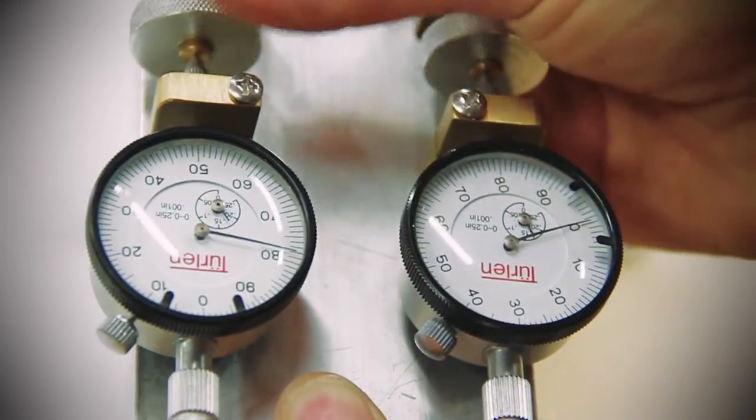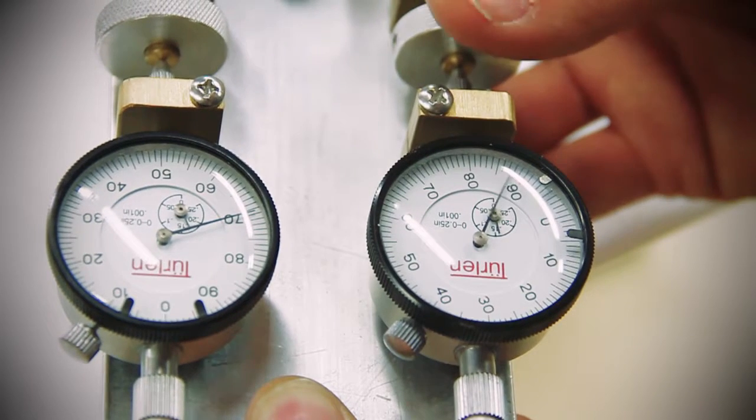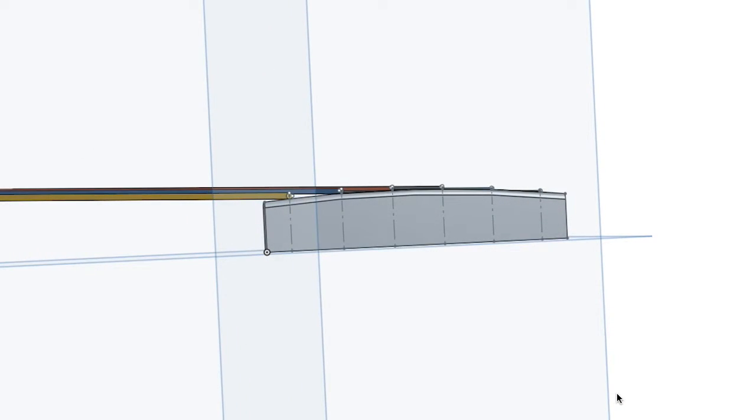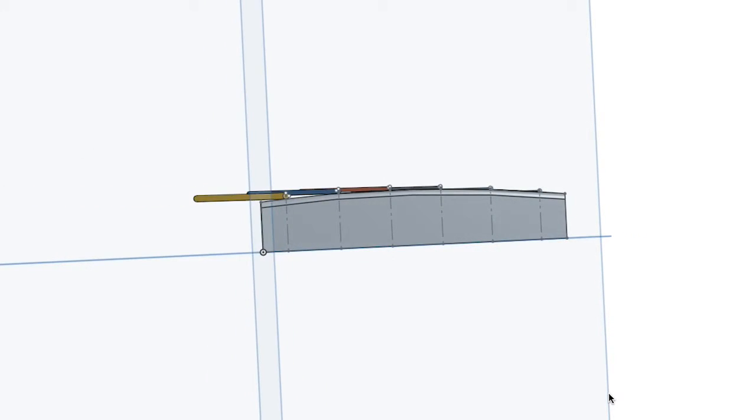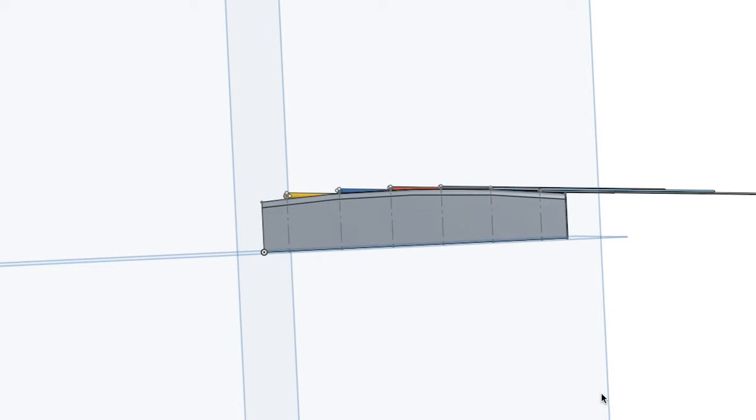The amount each rod has moved is shown on each of the dial indicators. The goal is to adjust the height of the first and sixth strings to the desired height, and the curve of the radius will determine the height of the other strings.